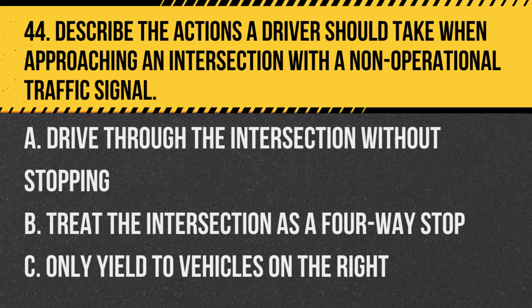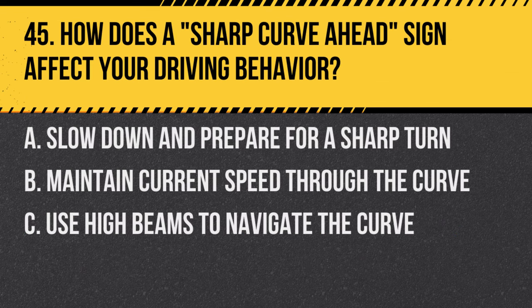Question 44. Describe the actions a driver should take when approaching an intersection with a non-operational traffic signal. A. Drive through the intersection without stopping. B. Treat the intersection as a four-way stop. C. Only yield to vehicles on the right. Answer: B. Treat the intersection as a four-way stop. When traffic signals are out, the intersection should be treated as a stop sign-controlled intersection.